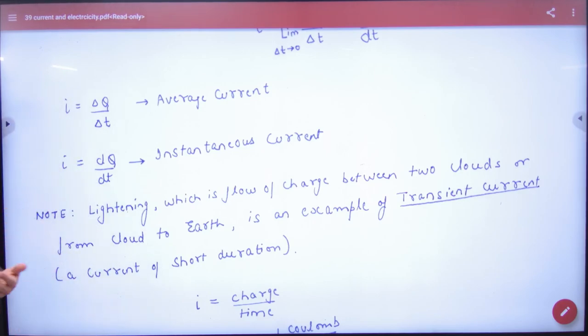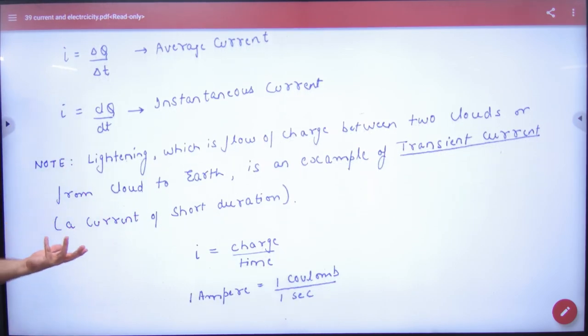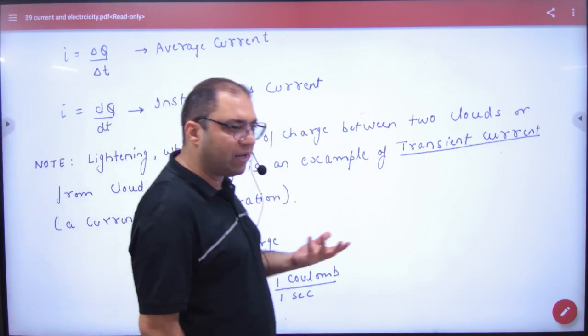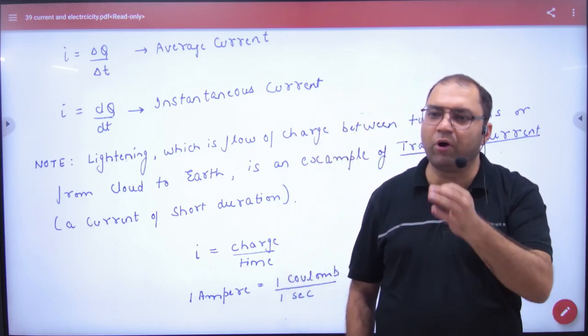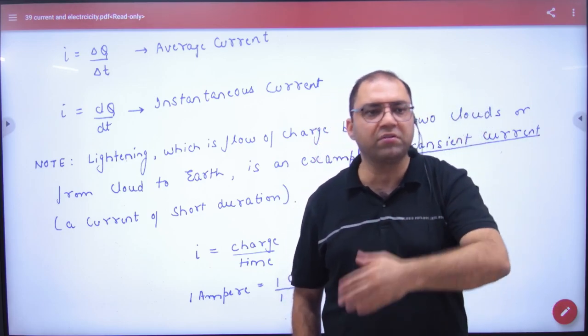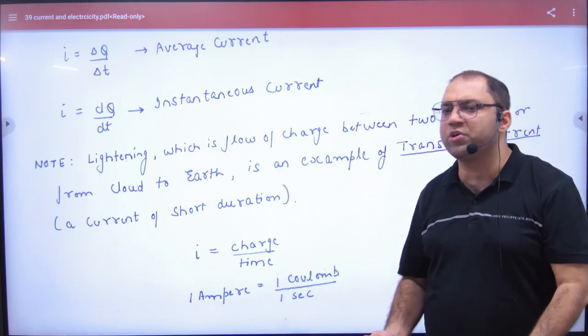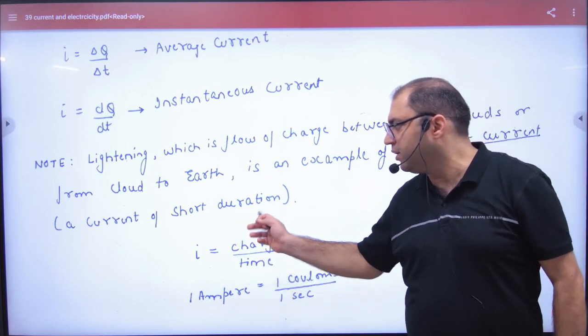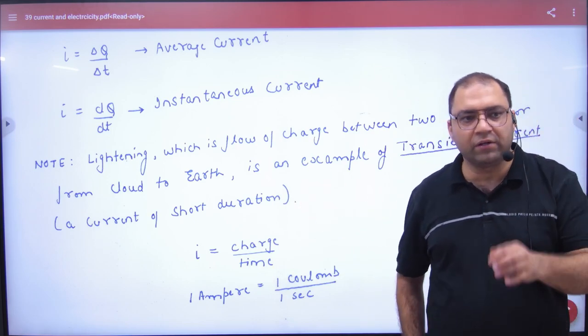Now understand some type of current. The first type of current is lightning, which is flow of charge between two clouds, or cloud to earth, is an example of transient current. When a lightning strikes, the charge goes down. It goes down in a fraction of second. It goes down with a lot of charge. So in this case, the current for very small duration, what do we call? Transient current. In this chapter, we do not study transient currents.